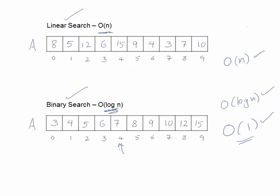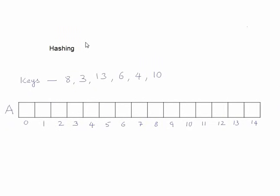In hashing, if a list of elements is given and an array space is given where we have to store the elements, we store each element at its own index — we take the value of an element itself as the index and store it there. So 8 is stored at index 8, and 3 is stored at index 3, and so on.